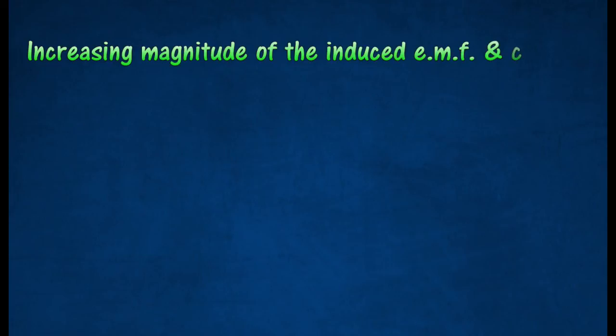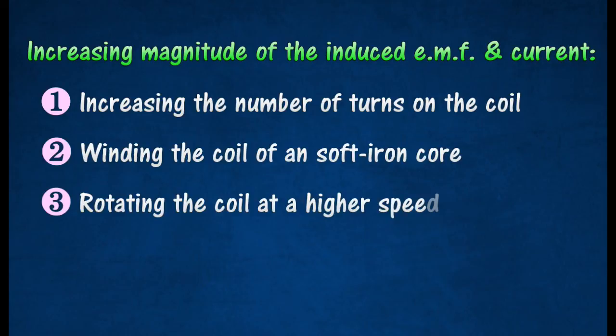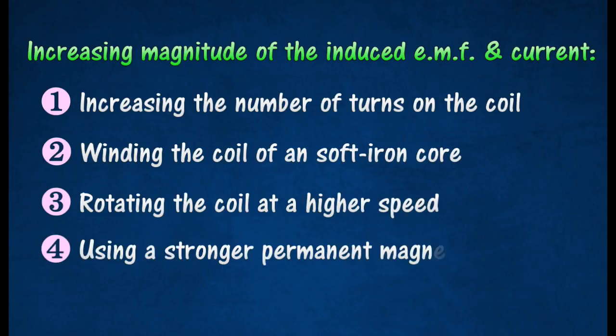The magnitude of the induced electromotive force and current produced by alternating current generator can be increased by increasing the number of turns on the coil, winding the coil around a soft iron core, rotating the coil at a higher speed, and using a stronger permanent magnet.